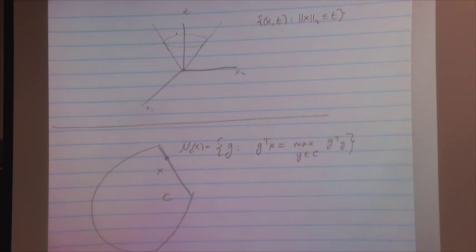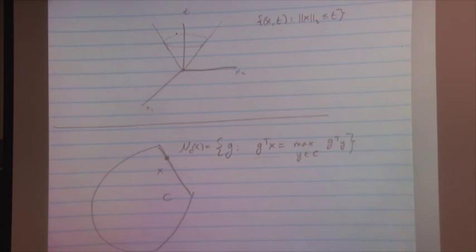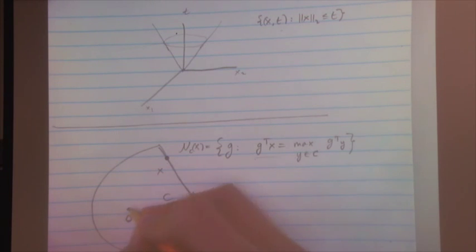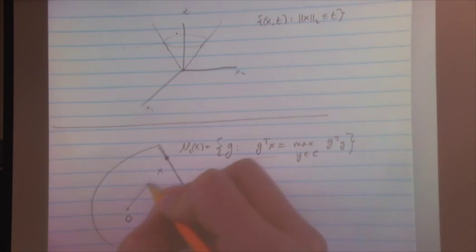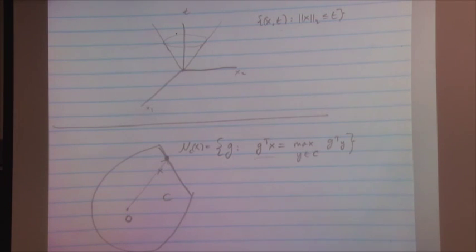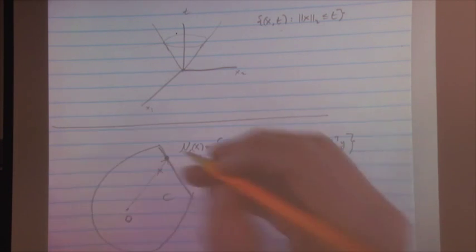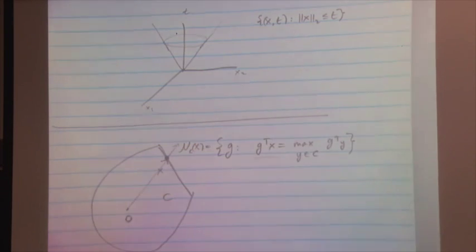Strict separation is not always possible. For example, in R², let D be all points with negative y-coordinate and C be the epigraph of y = 1/x². These are convex, non-empty, and disjoint, but C's points get arbitrarily close to the x-axis, so no strictly separating hyperplane exists. The supporting hyperplane theorem states: for a convex set and any boundary point x_0, there exists a supporting hyperplane — a vector a such that C ⊆ {x : a^T x ≤ a^T x_0}.